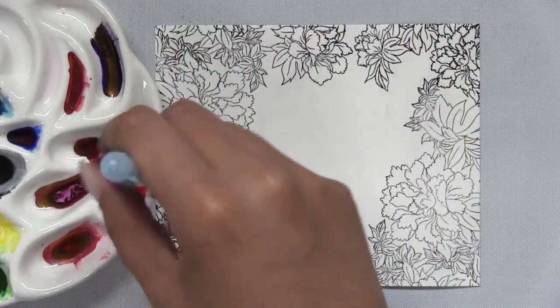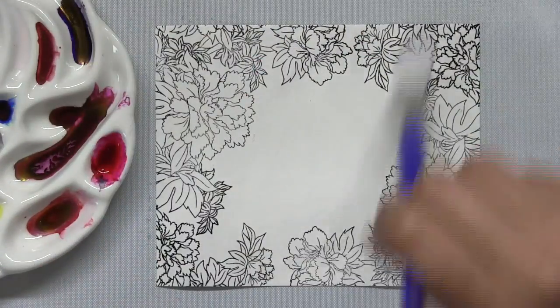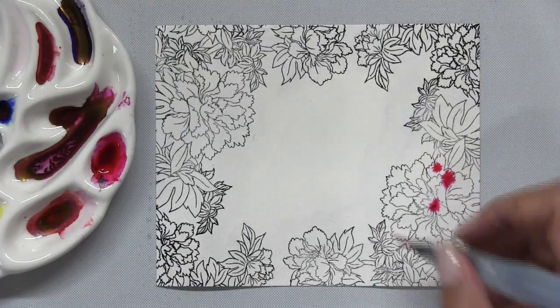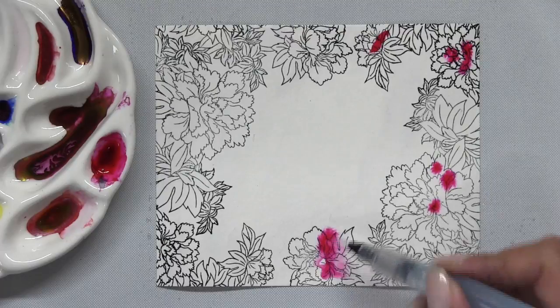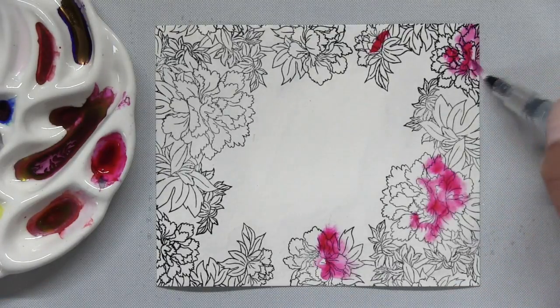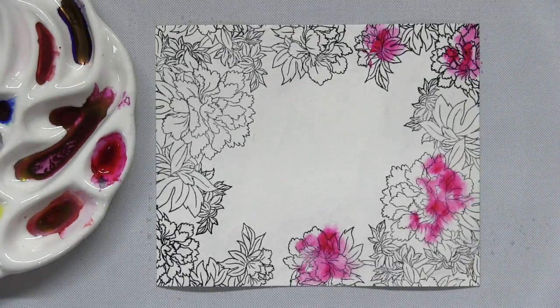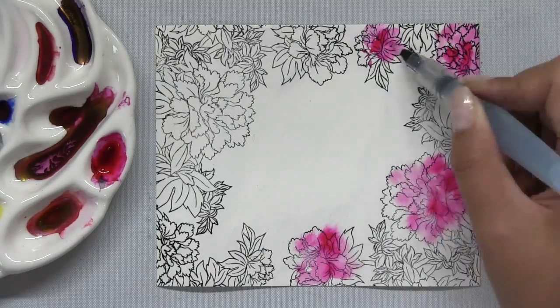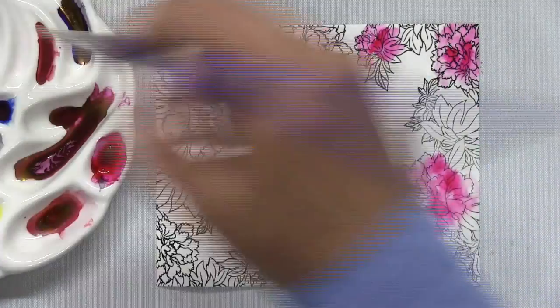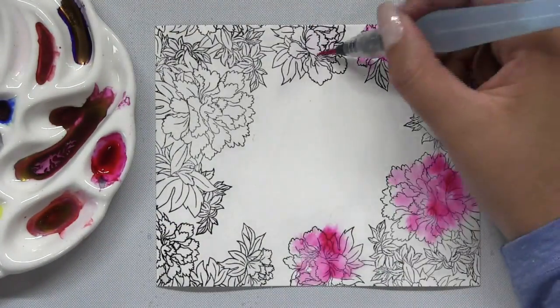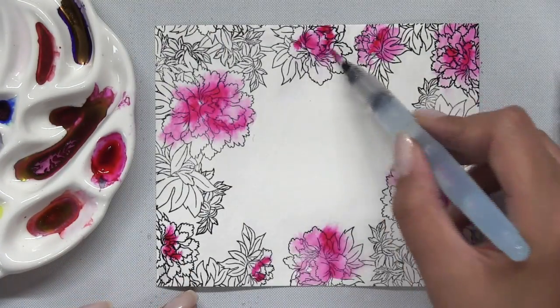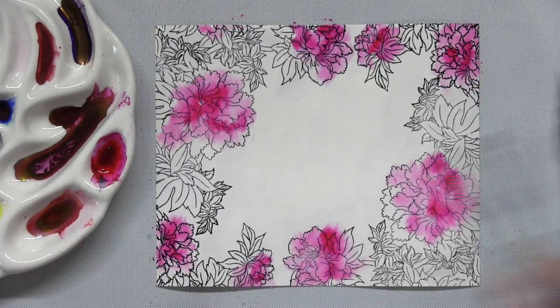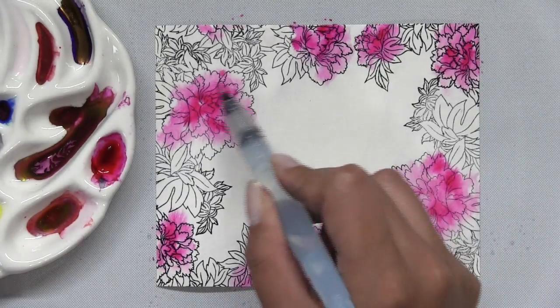Once I finish stamping the entire panel or the edges of my panel, I'm just going to take a number 16 filbert paintbrush to apply a clean wash of water onto my panel because I'm going to be doing some wet-on-wet watercoloring. Wet-on-wet watercoloring means that you're applying pigment to a wet area on your paper and then you're just going to get a nice blend of color.